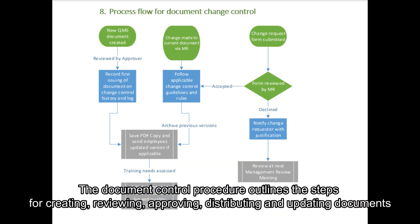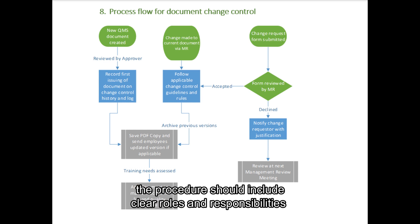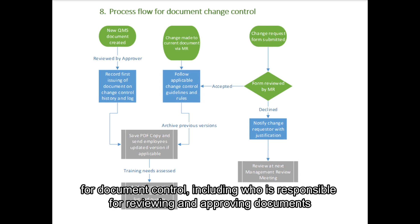The document control procedure outlines the steps for creating, reviewing, approving, distributing, and updating documents. The procedure should include clear roles and responsibilities for document control, including who is responsible for reviewing and approving documents.